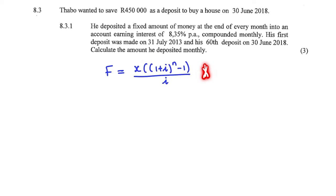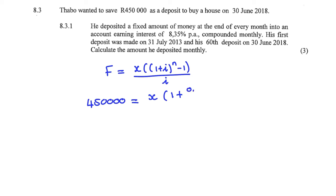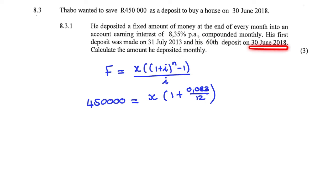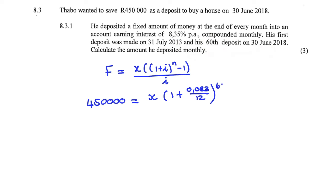So I can find the future value annuity formula on the formula sheet. Our question is to find the monthly amount deposited. We know that this amount grew to 450,000 Rand, so that is my F value. We don't know the value of X. The i value is 0.083 divided by 12 because it is compounded monthly. We need to be careful with N because the information says his 60th deposit was on the 30th of June 2018, so he made 60 deposits — not 60 times 5 for 5 years. So N is simply 60.